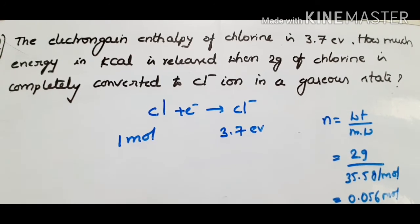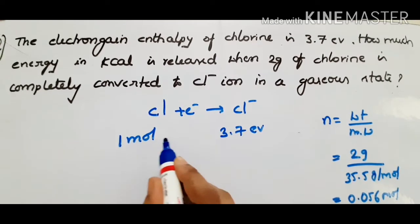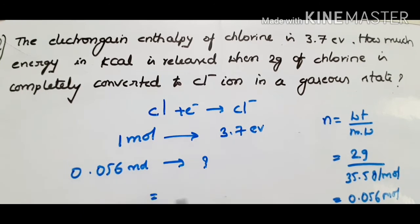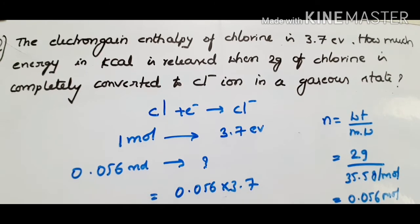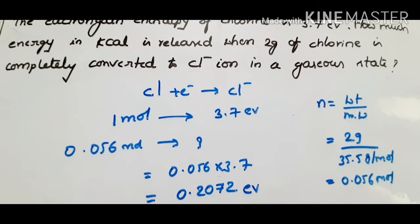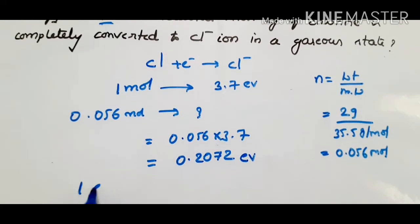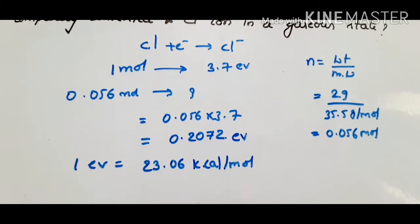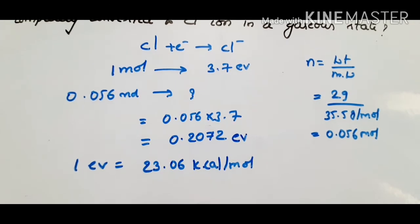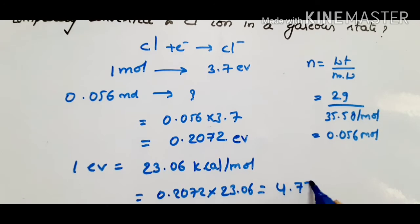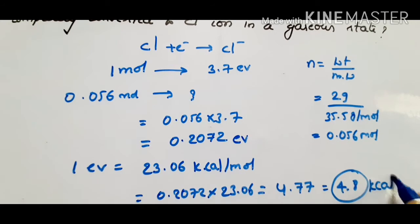By cross multiplication: for 1 mole, 3.7 eV is released; for 0.056 moles, multiply directly to get 0.2072 eV. This is the energy released when 2 grams of chlorine is converted into Cl⁻ ion. To convert to kilocalories, use: 1 electron volt = 23.06 kcal/mol. Multiply 0.2072 by 23.06 to get approximately 4.77, which rounds to 4.8 kilocalories.